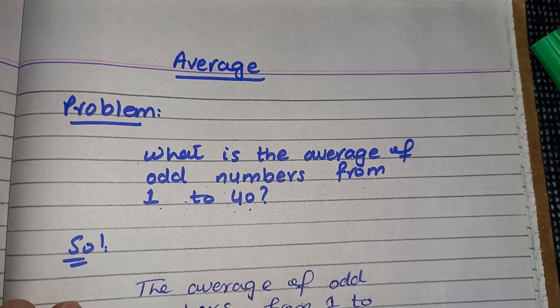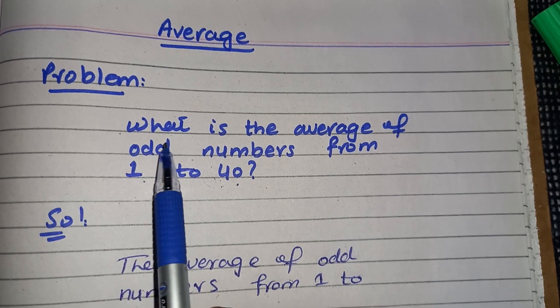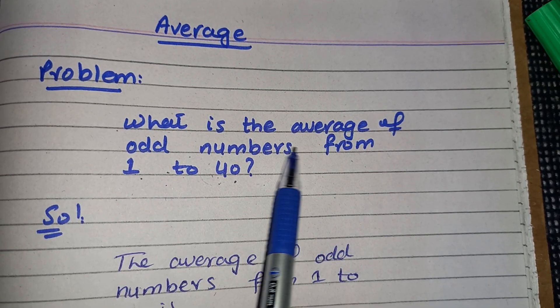Hello everyone, as you know we are doing average problems and now we will discuss another problem: what is the average of odd numbers from 1 to 40?